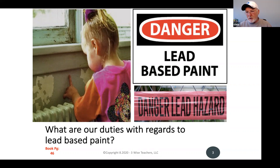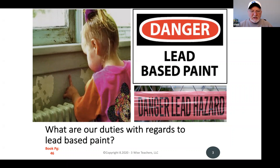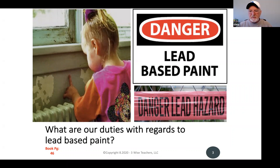The second thing the seller is required to do is provide a pamphlet to the buyer. The name of that pamphlet is 'Protect Your Family from Lead in the Home.' It was written by the EPA. The seller won't know where to get it, so they'll ask the agent. You can print it offline or get glossy copies. The seller is required to provide that pamphlet to the buyer.